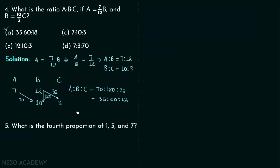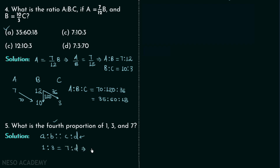In problem number five, we need to find the fourth proportion of 1, 3, and 7. We know that in a:b proportional to c:d, d is the fourth proportion. With a=1, b=3, c=7, we have 1:3 = 7:d, giving 1/3 equals 7/d. Cross-multiplying, d equals 7×3 equals 21. So 21 is the answer.